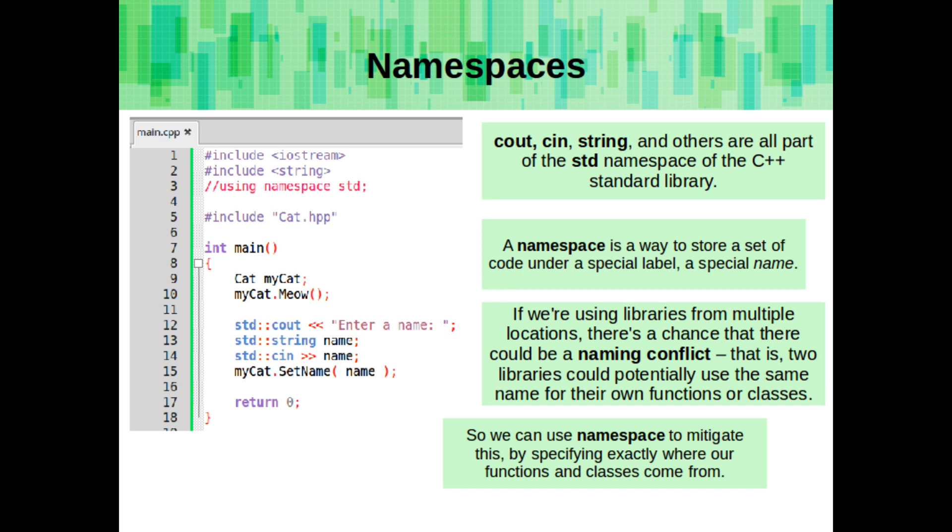A namespace is a way to store a set of code under a special label, or a special name. If we're using libraries from multiple locations, there's a chance that there could be a naming conflict. That is, two libraries could potentially use the same name for their own functions or classes.